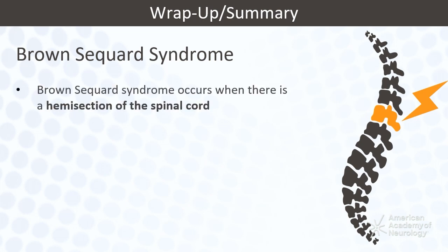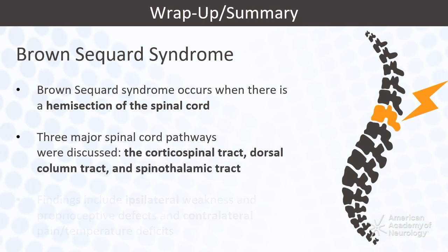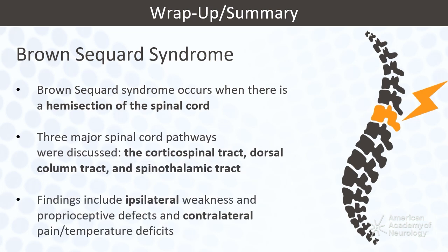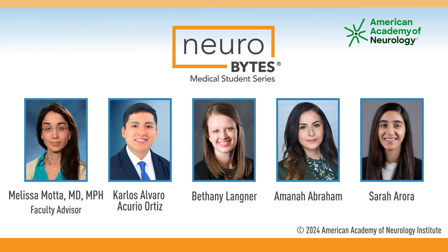In summary, Brown-Séquard syndrome occurs when there is a hemisection of the spinal cord. Three major spinal cord pathways are involved: the corticospinal tract, dorsal column tract, and spinothalamic tract. Findings include ipsilateral weakness and proprioceptive defects and contralateral pain and temperature deficits. For more information on Brown-Séquard syndrome, including a review of spinal cord anatomy, please see the course resources. For more information on this and other neurologic conditions, please visit aan.com/neurobytes.